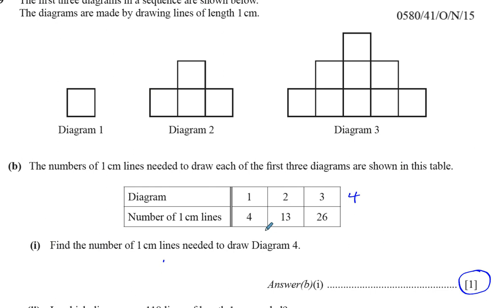So we can just look at the way this pattern increases. When I get from four to thirteen, I have to add nine. Thirteen to twenty-six, I have to add thirteen. So I'm thinking the amount I add is going to increase by four each time. So I now have to add seventeen — that's my gut feeling.